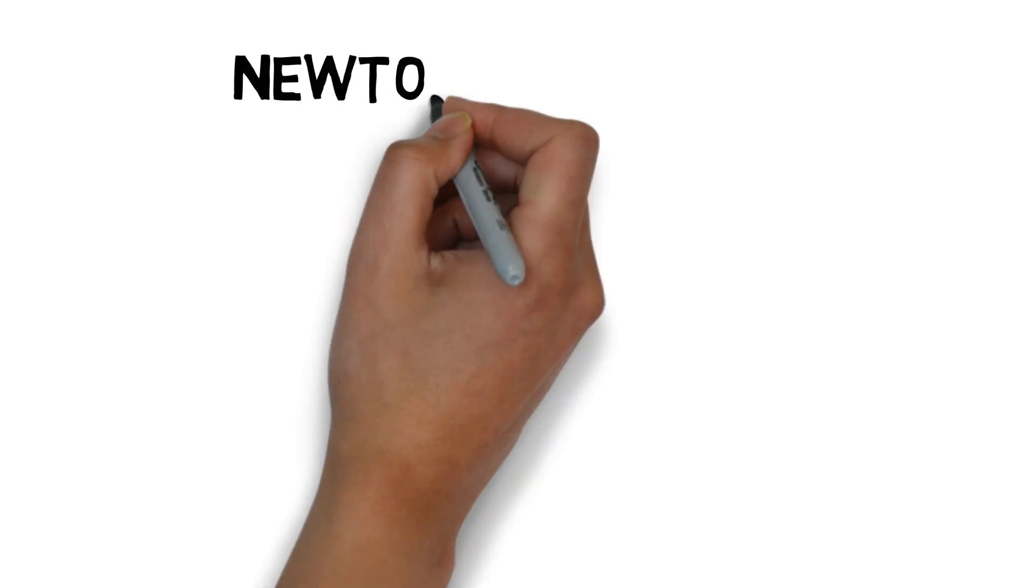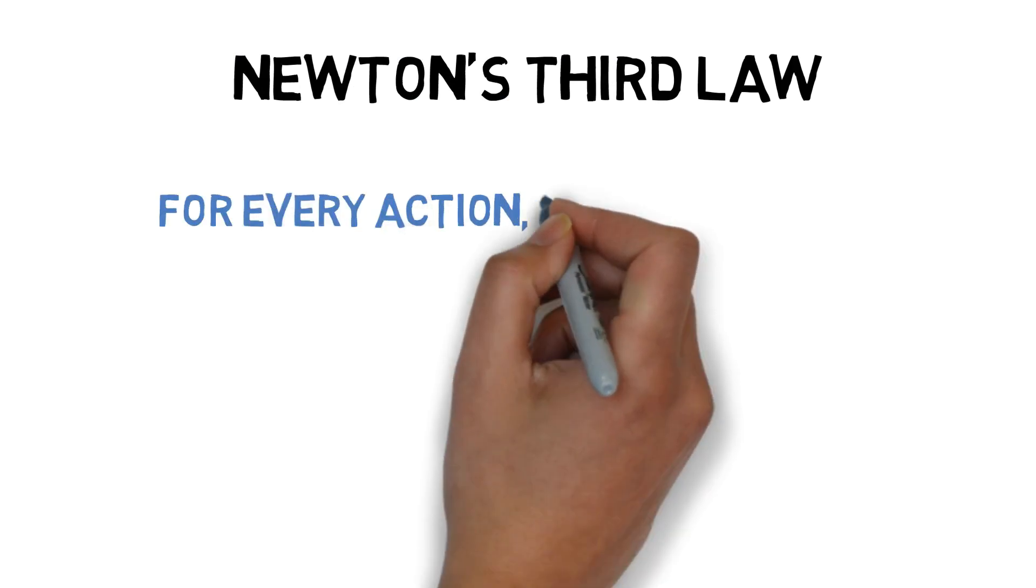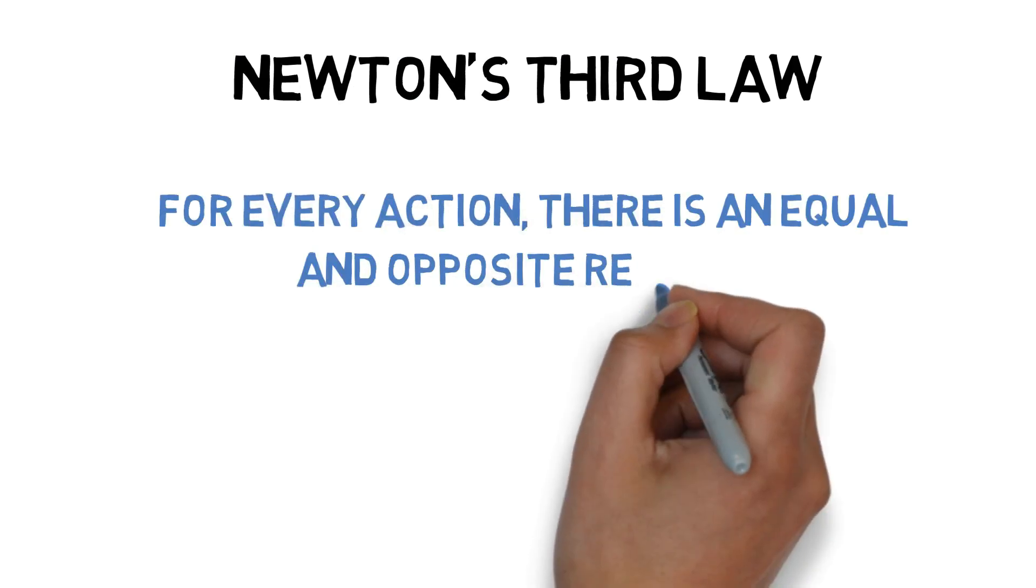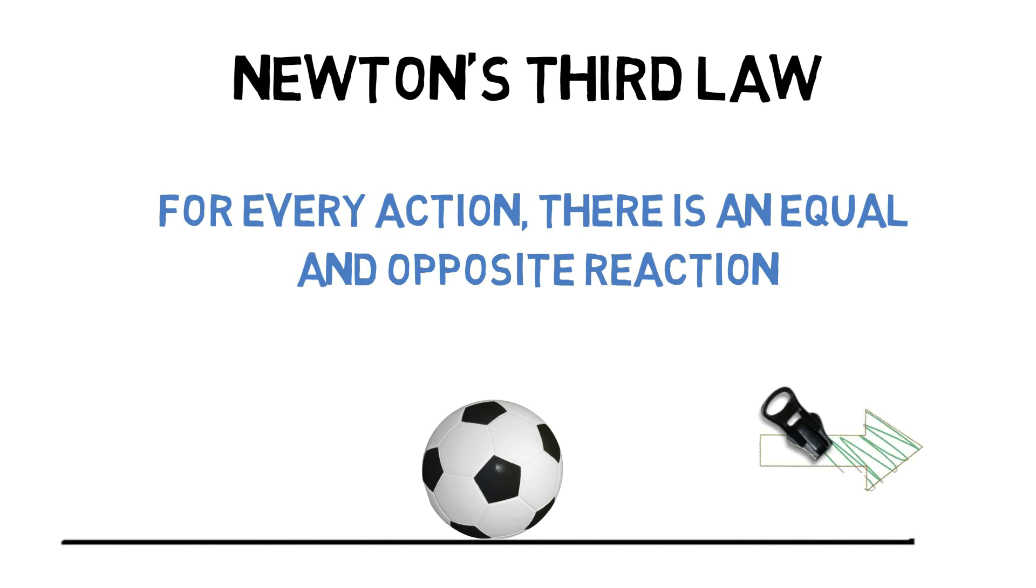Now let's understand Newton's third law of motion. The third law says for every action, there is an equal and opposite reaction. A force is a push or a pull that acts upon an object due to its interaction with another object. According to Newton, whenever objects A and B interact, they exert forces upon each other, also known as action force and reaction force.